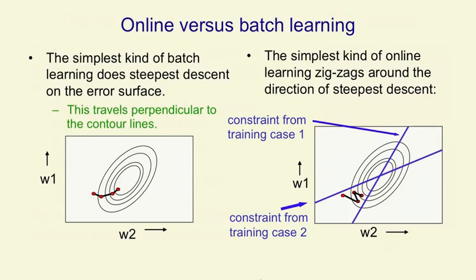But we could also do online learning, where after each training case, we change the weights in proportion to the gradient for that single training case. That's much more like what we do in perceptrons. And as you can see, the change in the weights moves us towards one of these constraint planes.